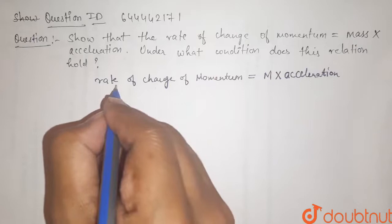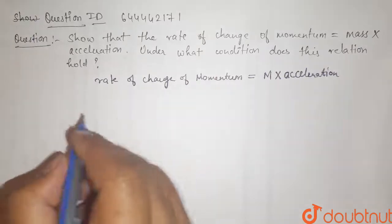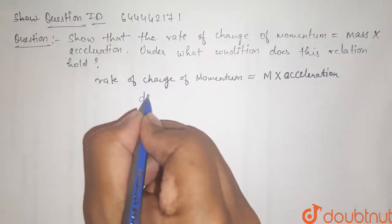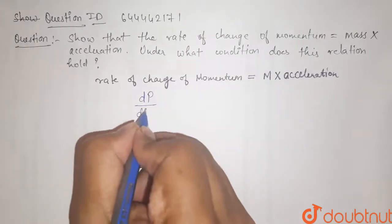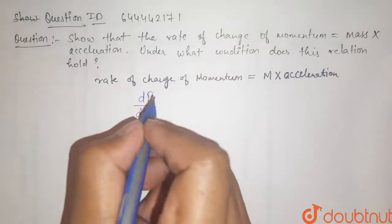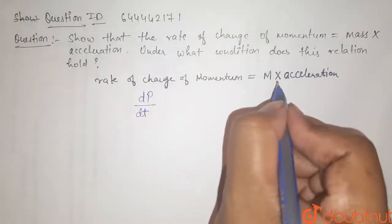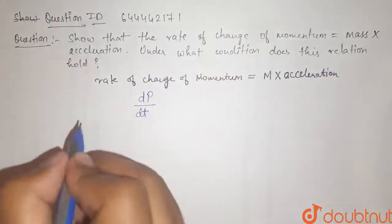So what is rate of change of momentum? Rate of change of momentum means dp by dt. So dp by dt is equal to mass into acceleration. This we have to prove.